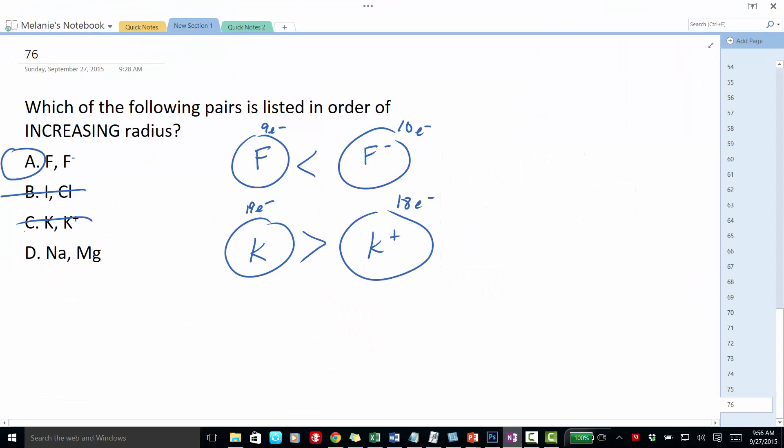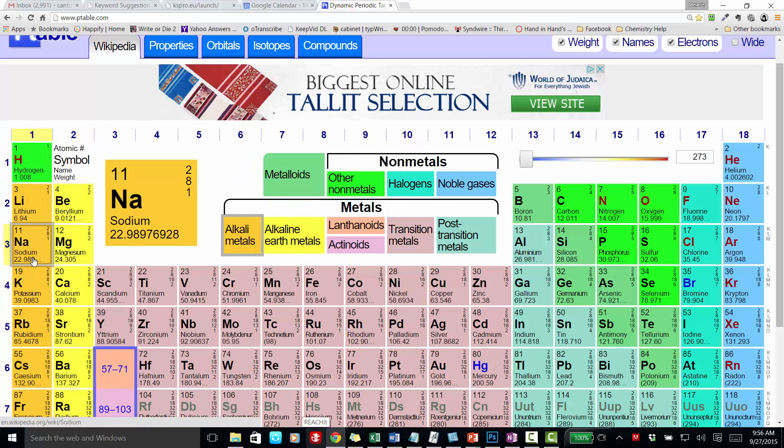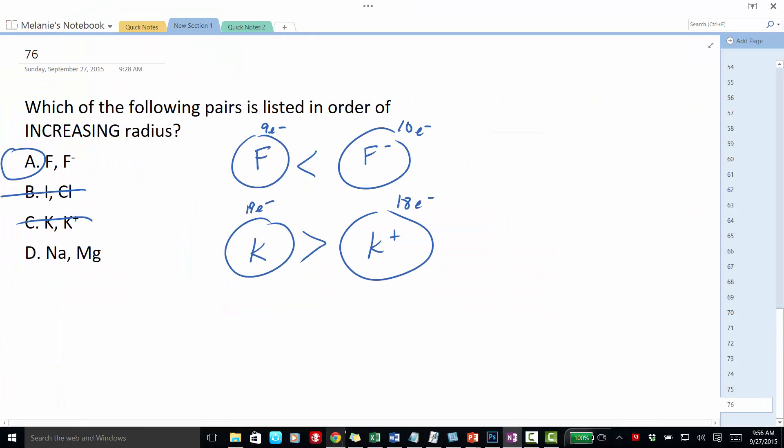Let's look at sodium and magnesium. Sodium and magnesium are right next to each other in the period. They both are in the same energy level. So when we look at elements in the same energy level, we've got sodium here with 11 protons and magnesium with 12 protons.